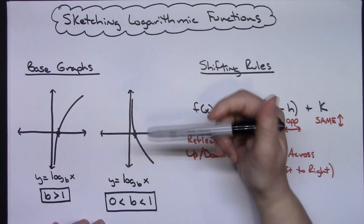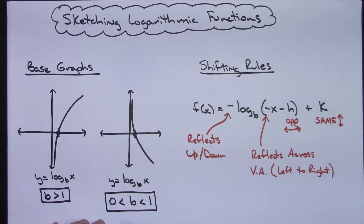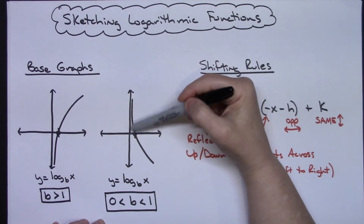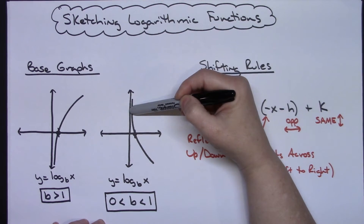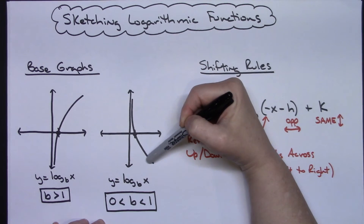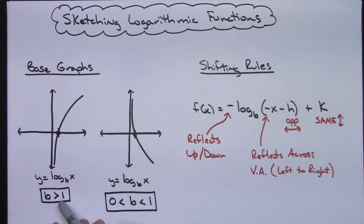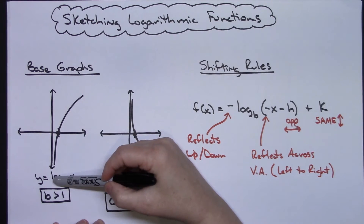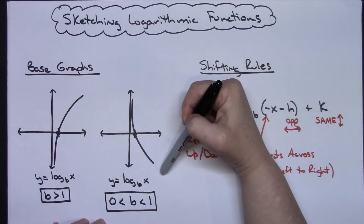Now for a base graph, if I take log of x base B and make that base a number in between 0 and 1 — a fraction — the only thing that does to the graph is it still goes through (1, 0) but it flips it. It's going to hug the y-axis as a vertical asymptote at the top and then come down and to the right. So those are your two basic graphs to memorize.